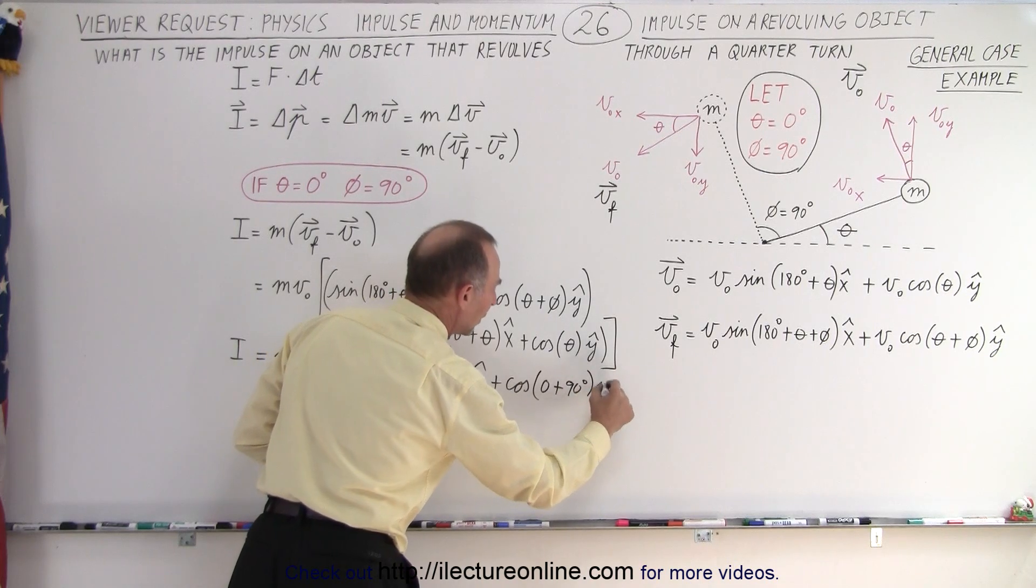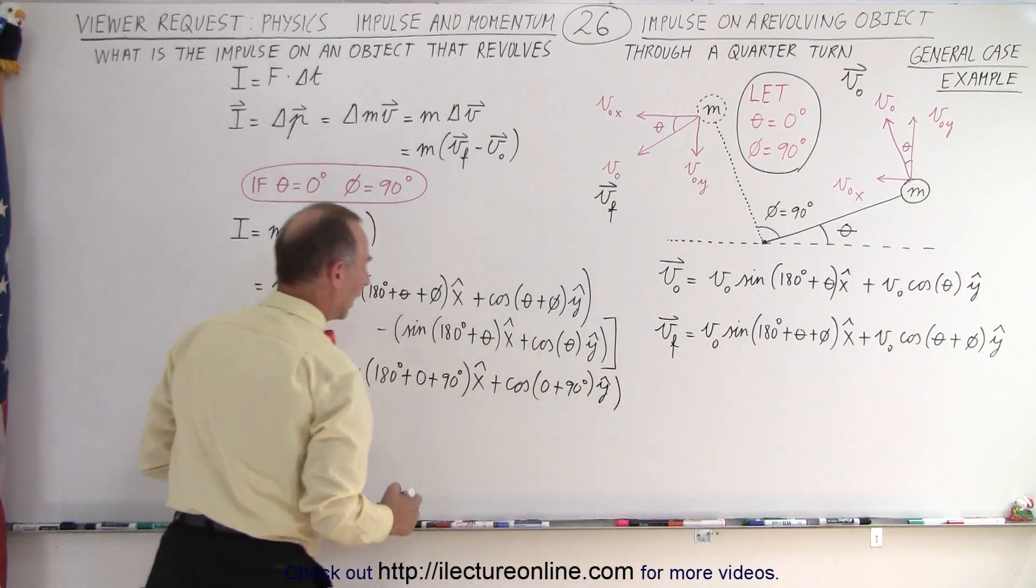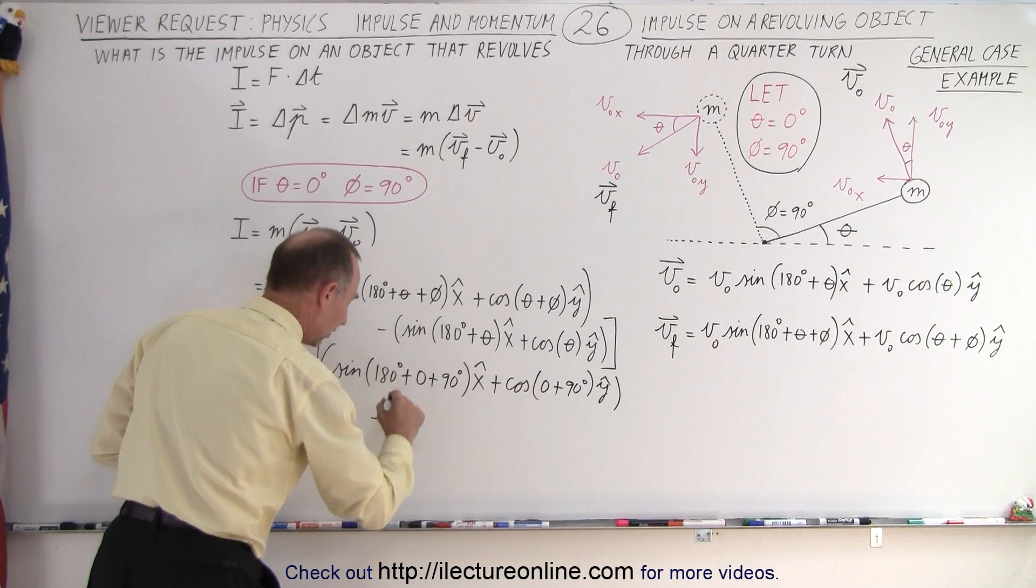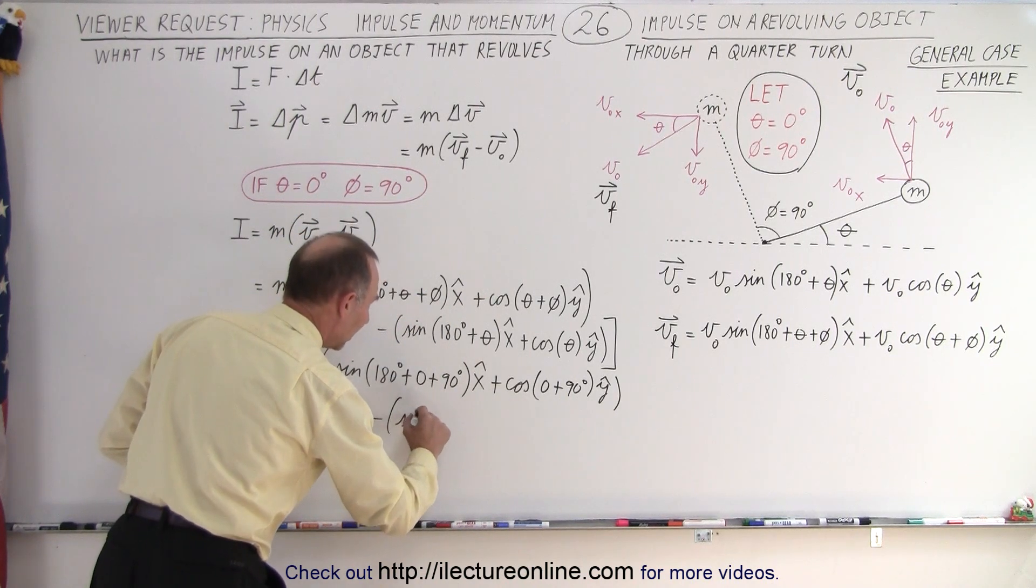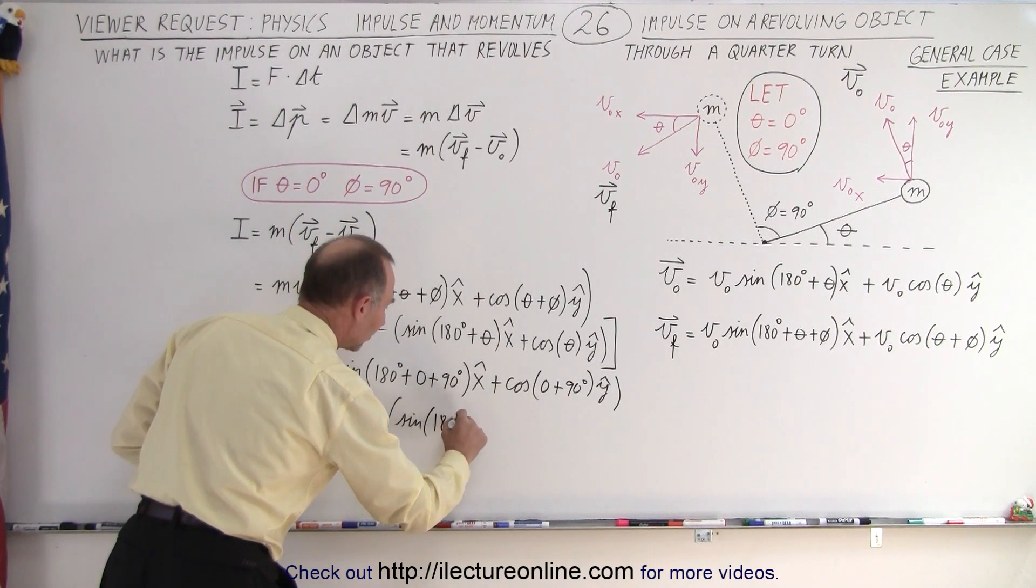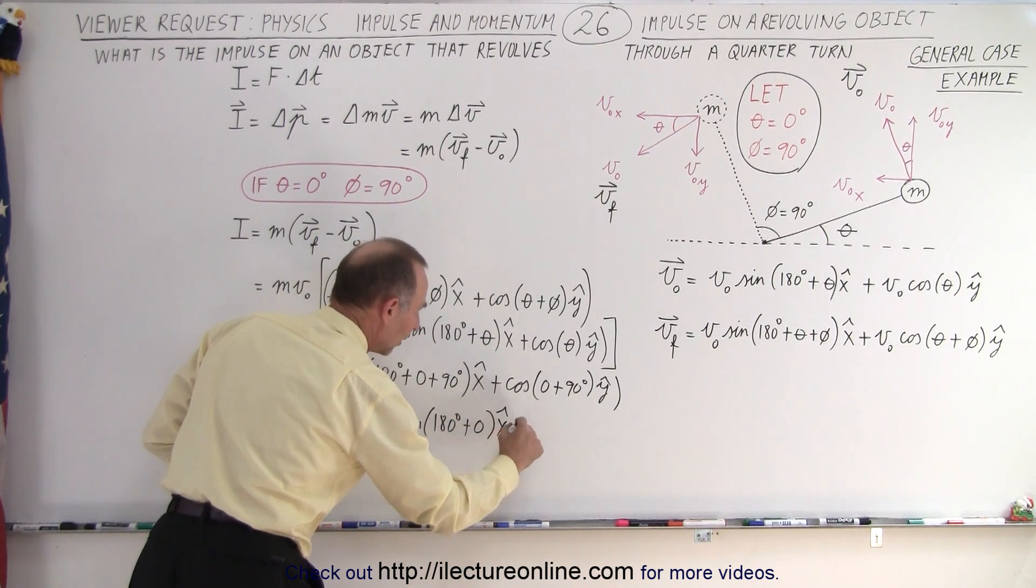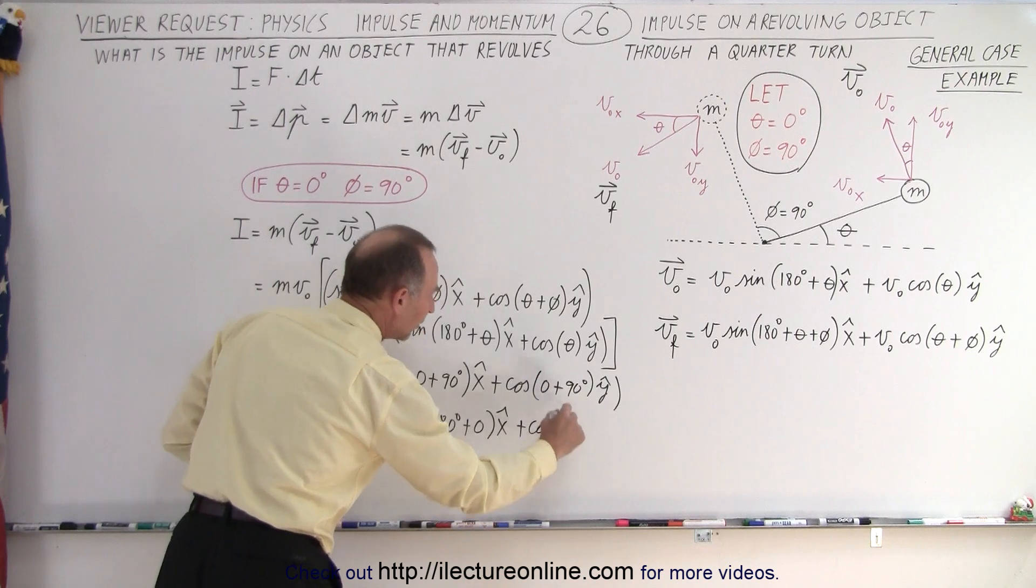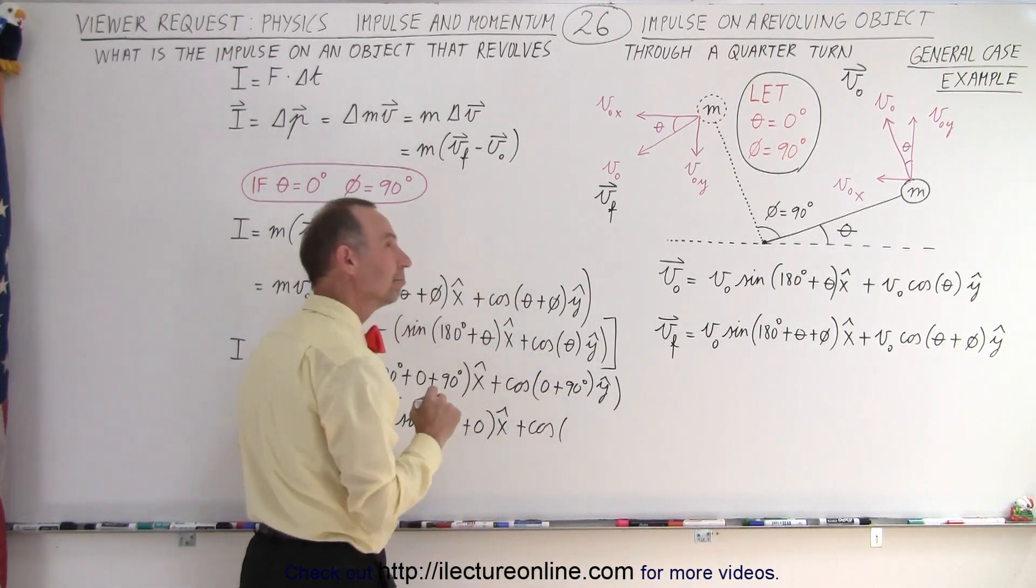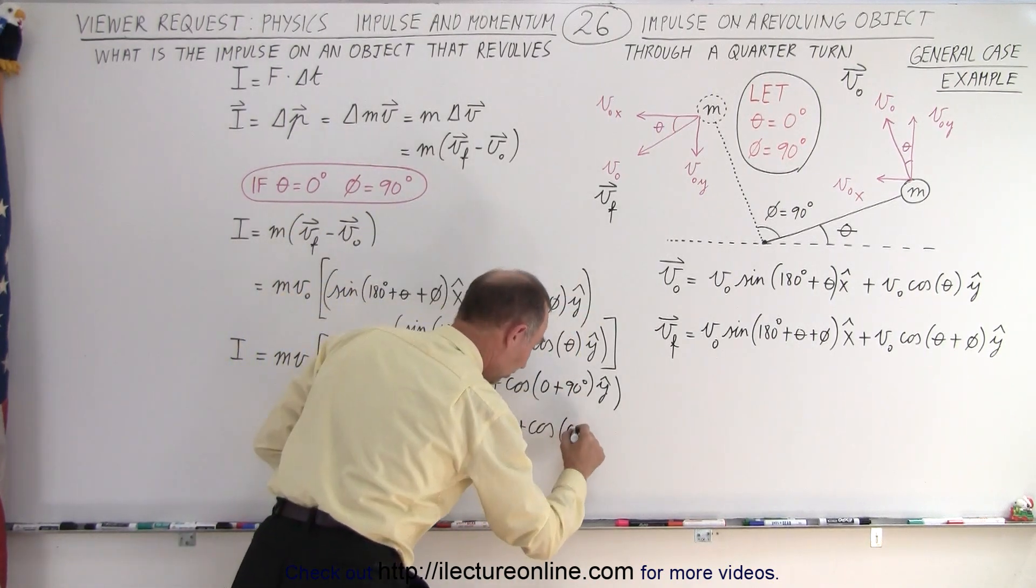And that would be in the y direction. And then we subtract the sine of 180 degrees plus theta, which is 0, plus the cosine of theta, which is 0,